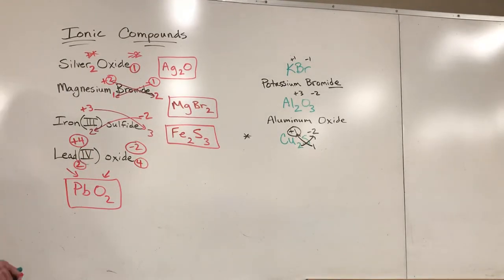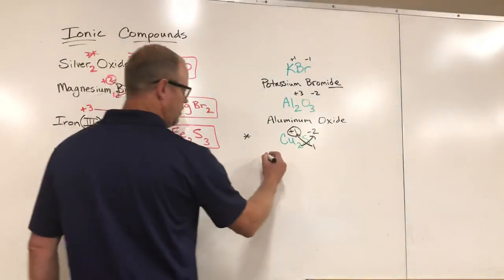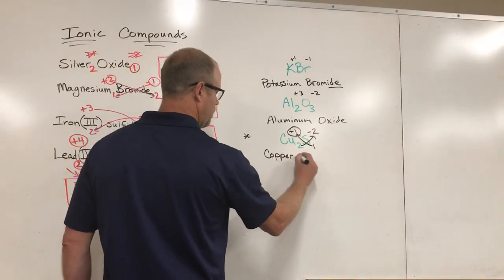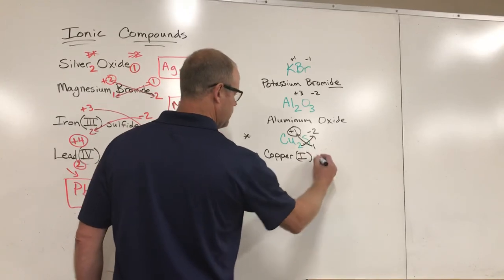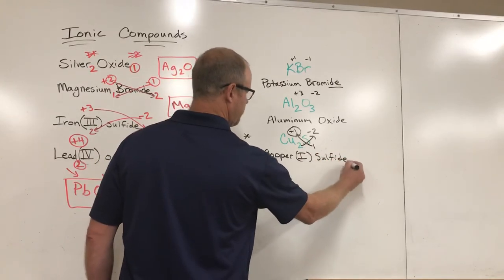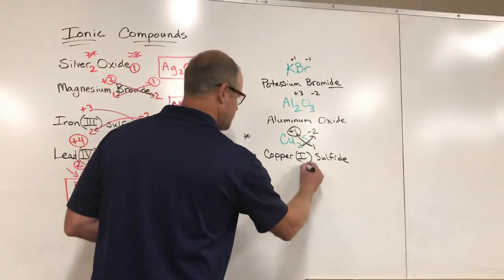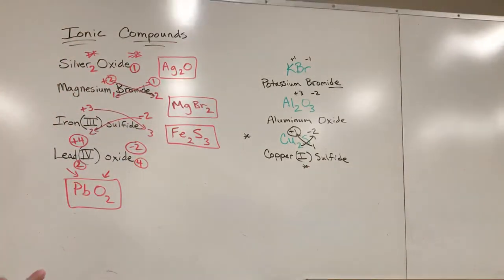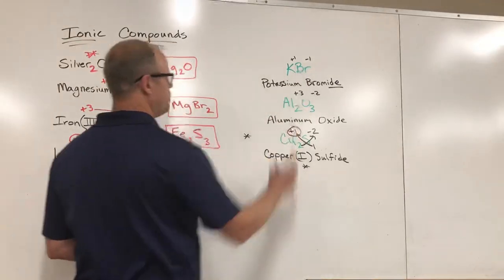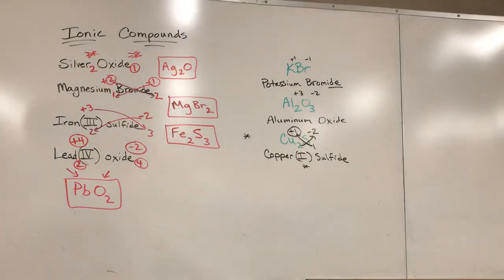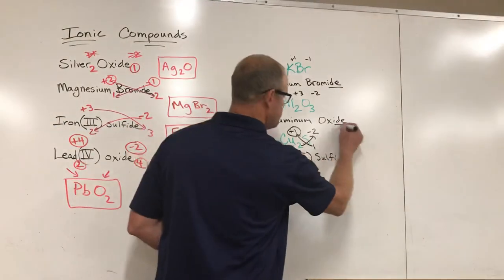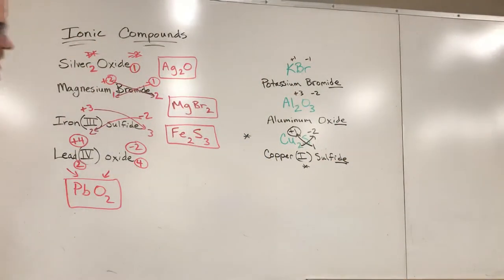So we would call this copper one sulfide. Once you get the hang of this it's fairly easy to follow. However, you need to watch out for these, which only occur on a handful of these transition metals we're going to be working with. Does it have more than one charge or not? You have to watch for that. If it does not have more than one charge, then we never include a roman numeral because there's only one way it's going to form with something else. The other thing you have to watch out for is that you always change it to -ide to signify that these things have chemically attached.